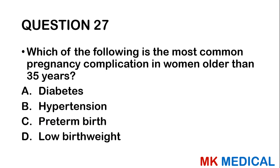Question twenty-seven: Which of the following is the most common pregnancy complication in women older than 35 years? A, diabetes; B, hypertension; C, preterm birth; D, low birth weight. Most of you are probably going to guess option B, but the answer is actually option A — diabetes.